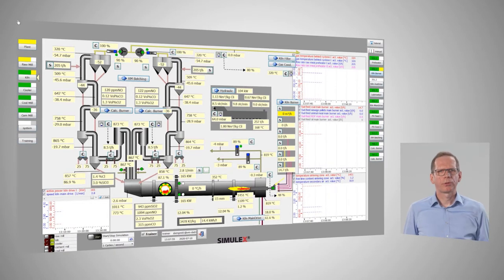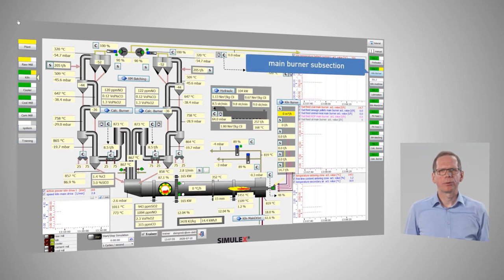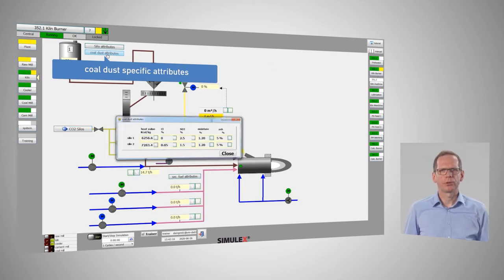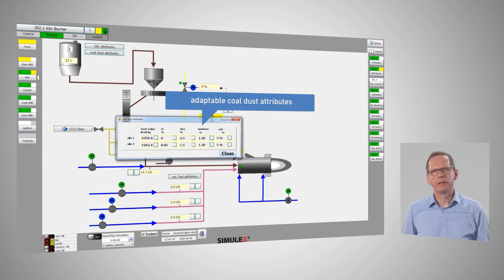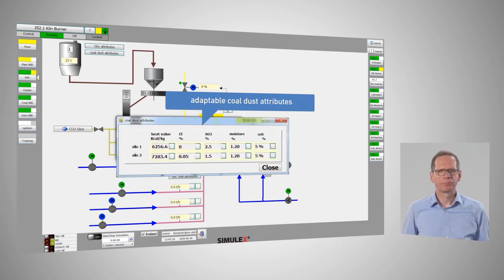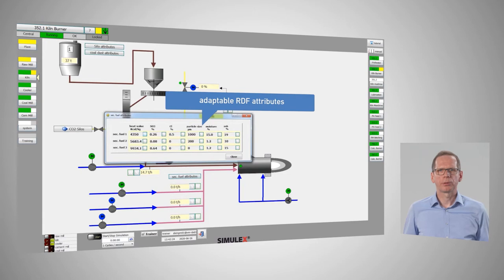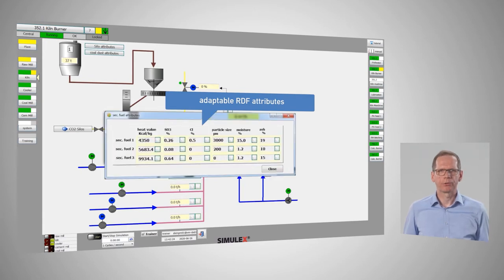Before we start the simulation, I want to give you a quick overview of some available data sets. For example, the burner section gives an overview of fuel types and key values such as coal dust composition, heat value, or moisture. No matter what fuel you want to include in your scenario, Simulex enables you to work with all values that are available and required under real conditions.